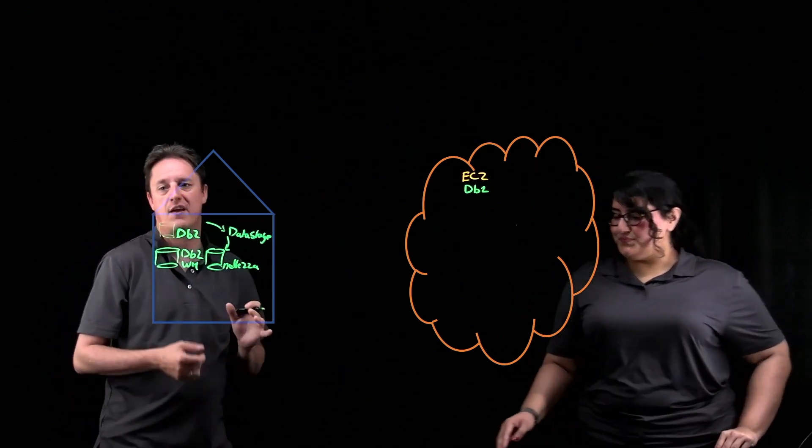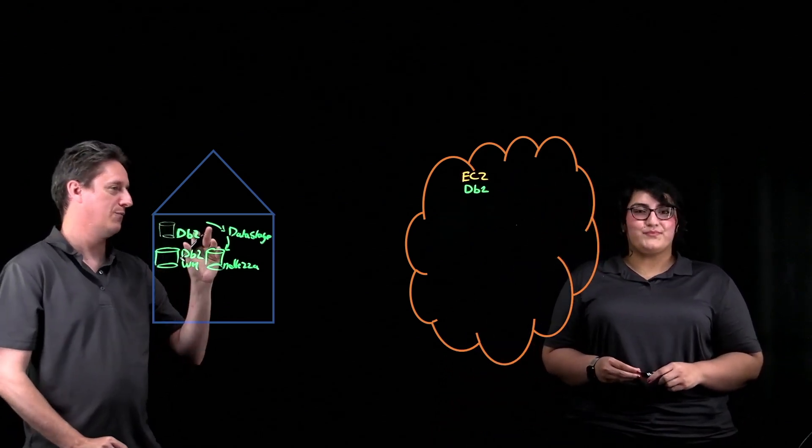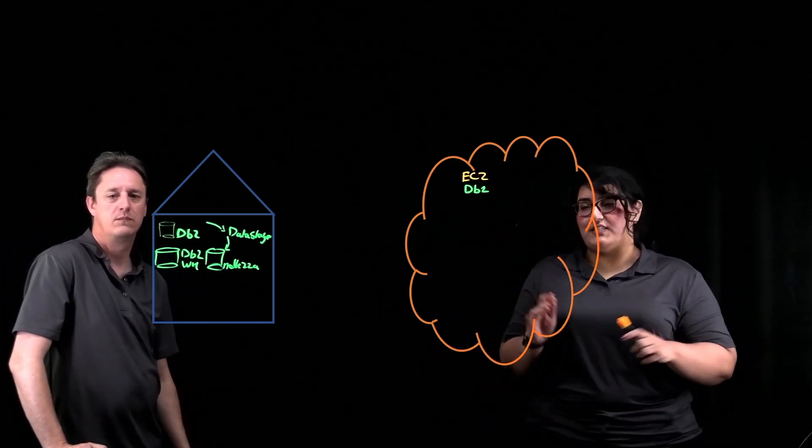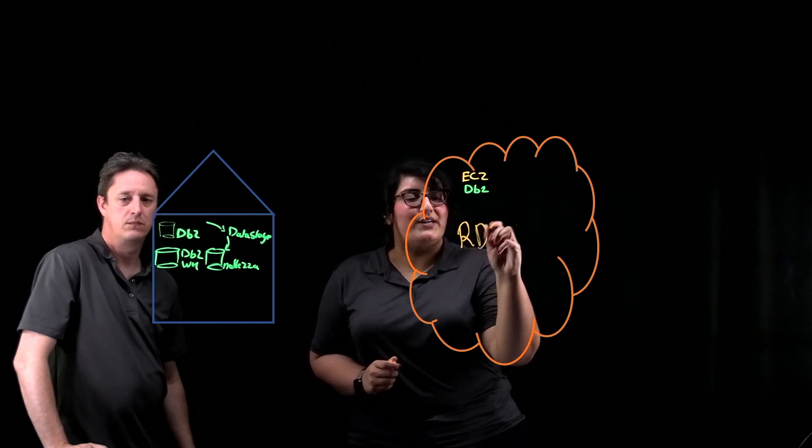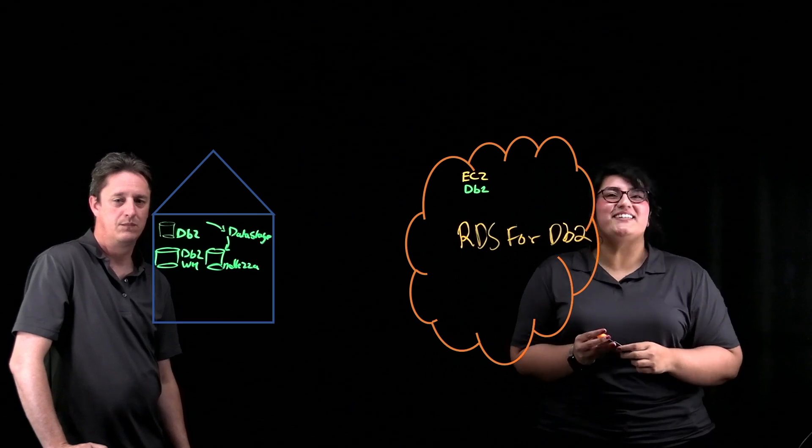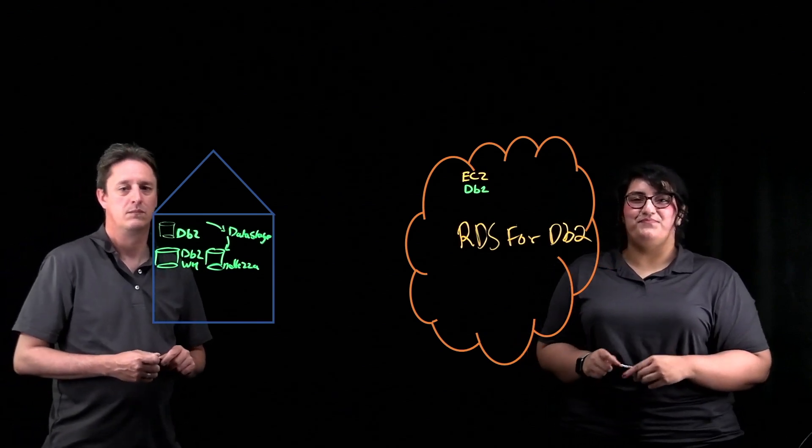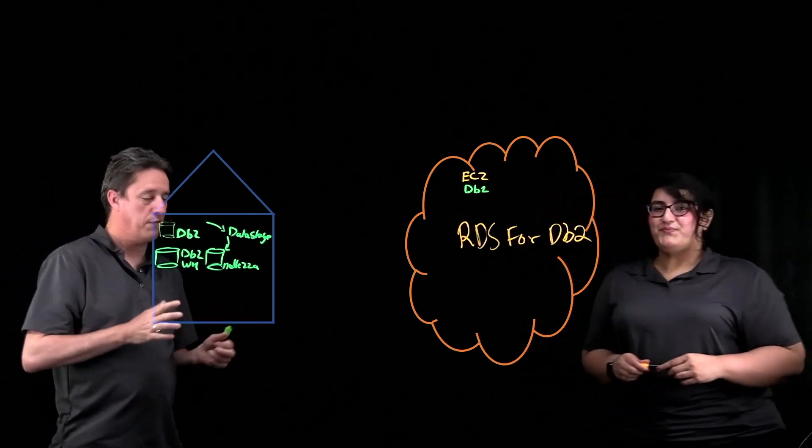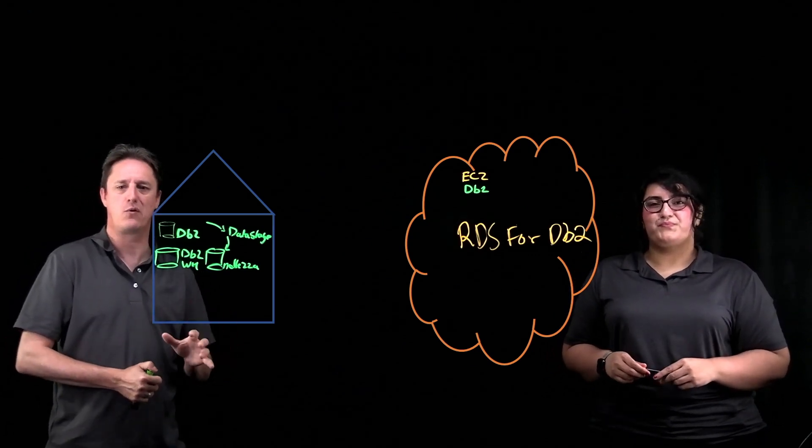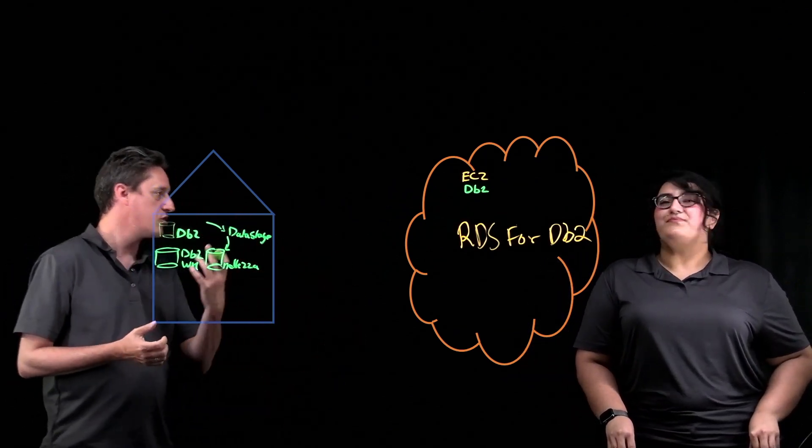Recently, we've done some fun stuff together where we've brought a much more managed option to DB2 customers on AWS. Run us through that. That's correct, Ryan. Recently, we launched Amazon RDS for DB2. RDS for DB2 allows you to fully manage, scale, and operate your DB2 database in the cloud. This is RDS, like every other flavor. It's a fully managed service. We do all of the undifferentiated heavy lifting, allowing the customer to focus on what's important to them, which is the database. In this case, we've just brought the DB2 engine into the fold.